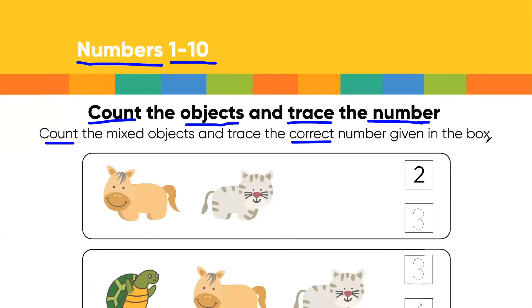Now in the first row you can see that we got two different types of objects, or you can say two different types of animals. So we have to count and see how many animals there are and then trace the correct number in front of it.